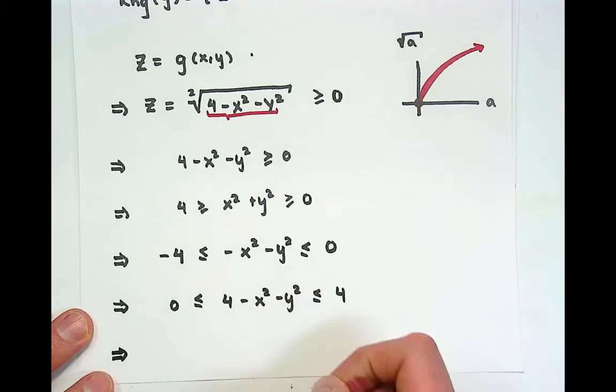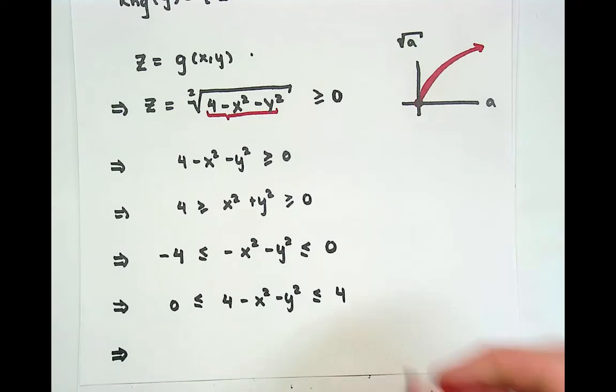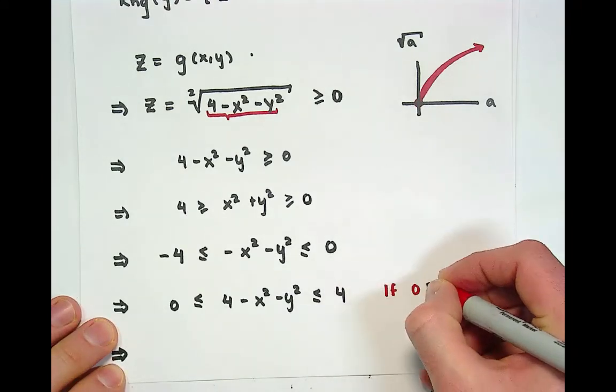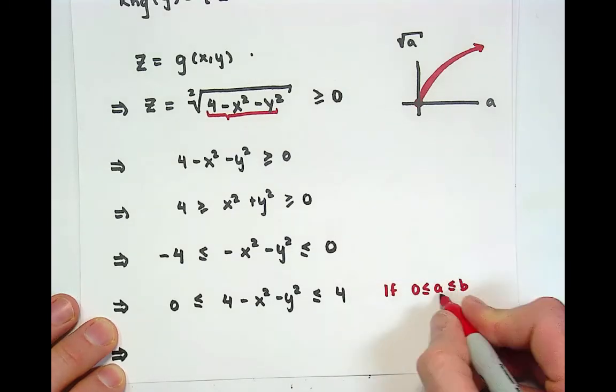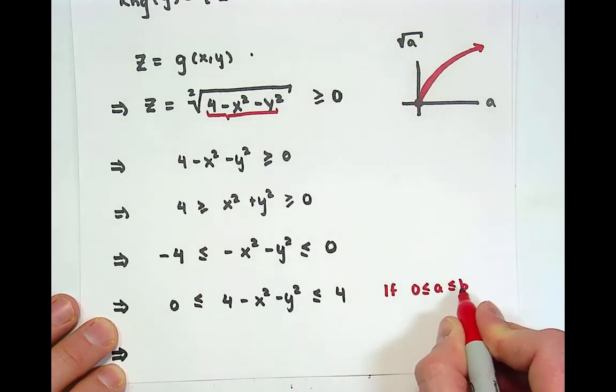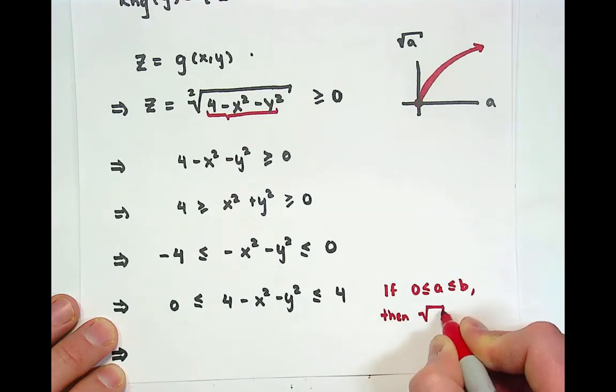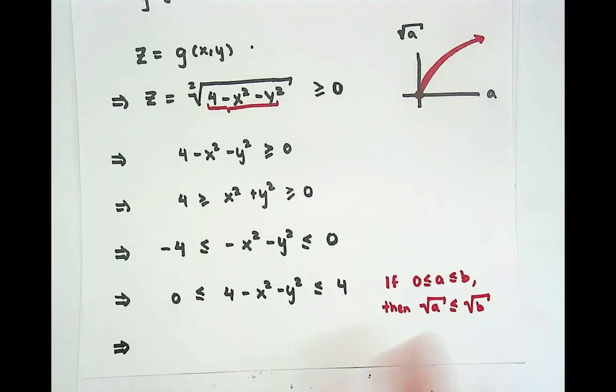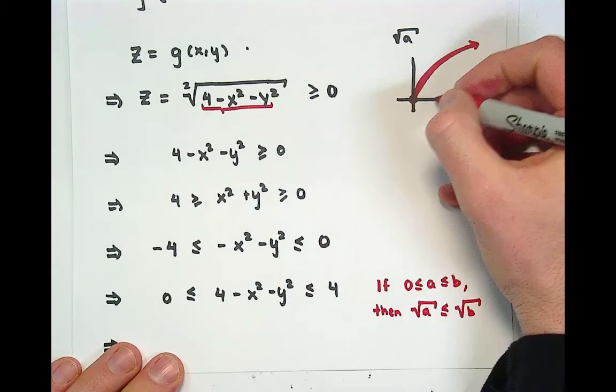Now if we take the square root of all this, one thing that you have to kind of know, this is a lemma as a side note. If you have two non-negative numbers, and the bounds on the non-negative numbers are a is less than b, I'm going to make a claim, then the square root of a must be less than or equal to the square root of b. That claim is actually hidden in this graph up here.